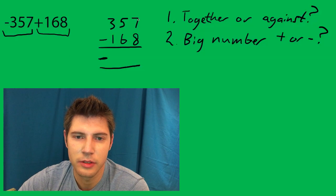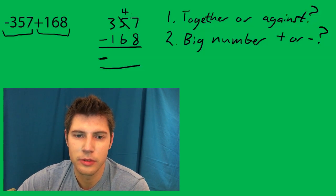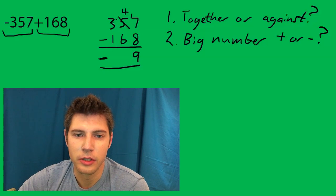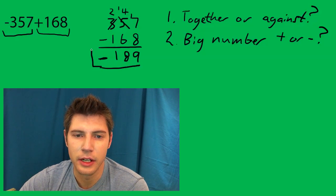Now I just subtract normally. Borrow, 17, gives me a 9. I have to borrow again, 14. So the answer is negative 189, is my final answer.